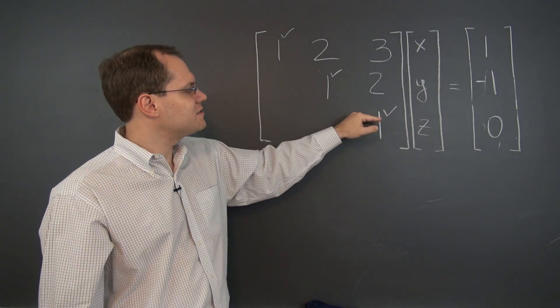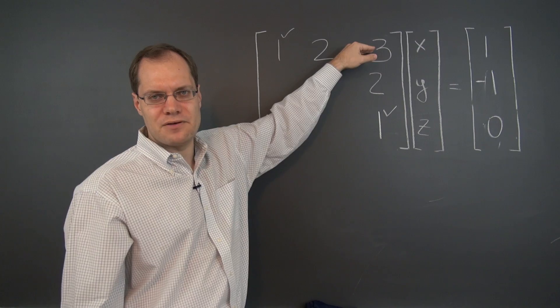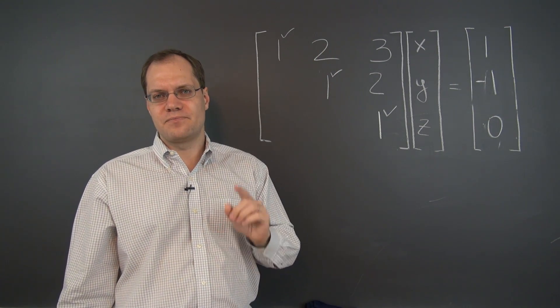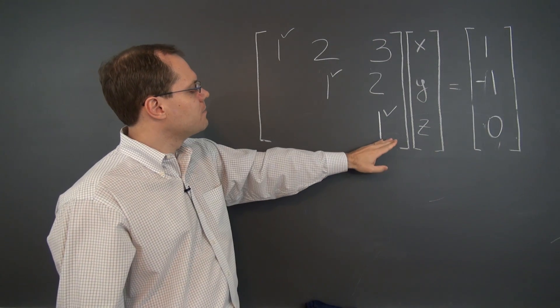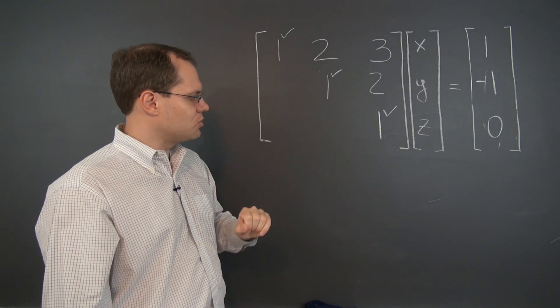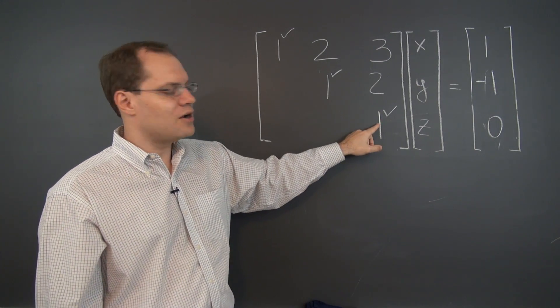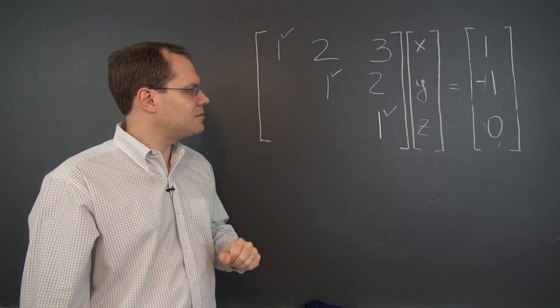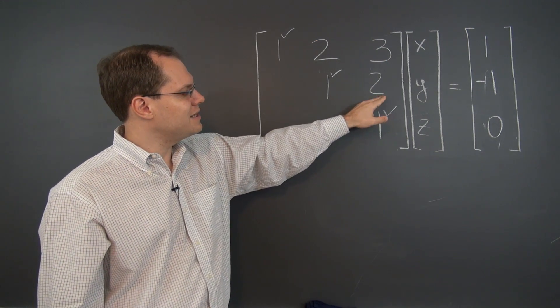And marching back to the left and eliminating everything above the pivots is called Jordan back substitution. So now that we're done with Gaussian elimination, let's embark on Jordan back substitution. So now one is our pivot with which we'll start eliminating everything above it. So let's first eliminate this two.